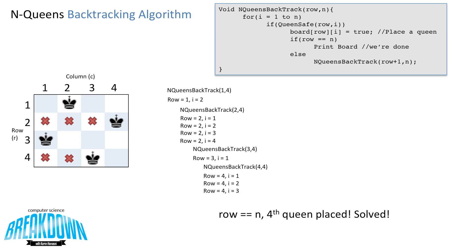Now we've reached the end, and the row is equal to n. All four queens are placed, so we've solved it for an optimal solution. If we let the algorithm continue to run, it would find the equivalent solutions such as the mirrored solution to the one we've just solved.